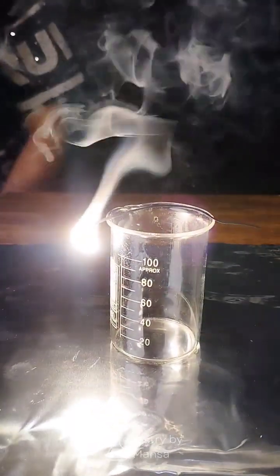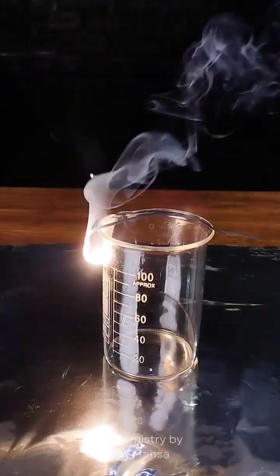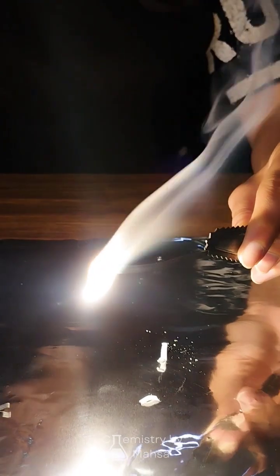As you can see, when magnesium burns, it produces an intense white light and a lot of heat. This is because it's reacting with the oxygen in the air to form magnesium oxide.